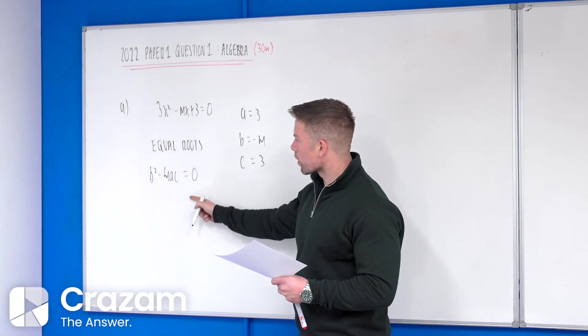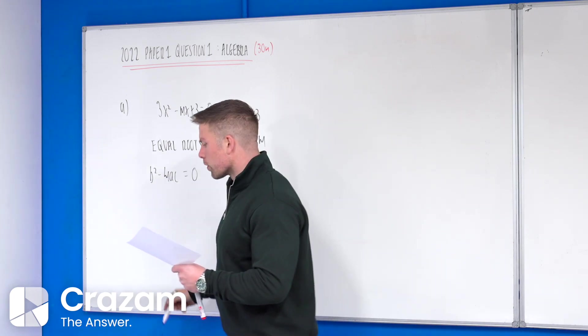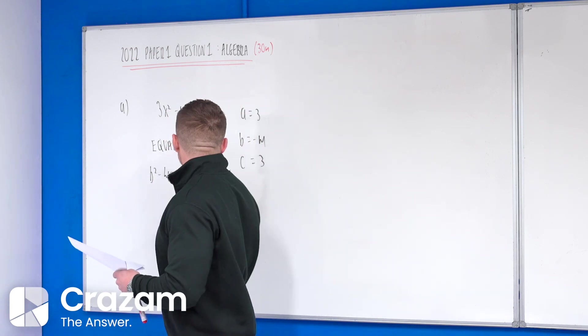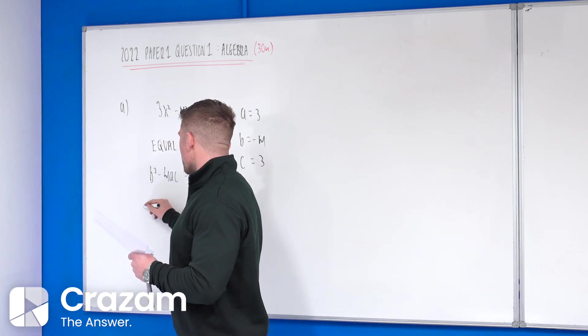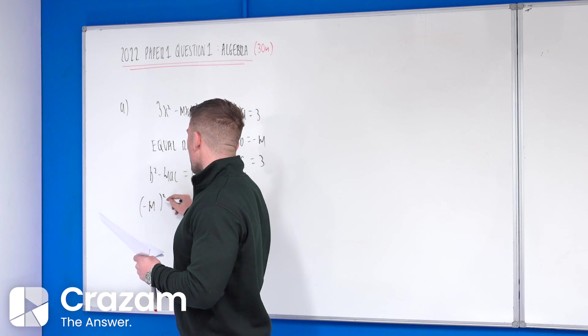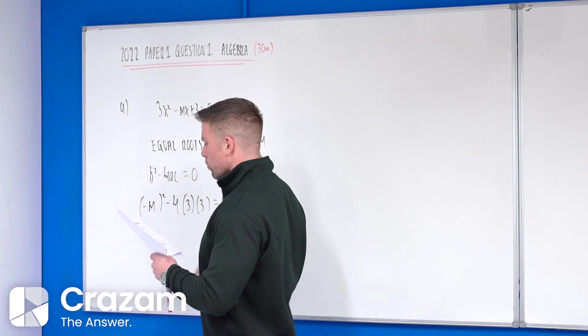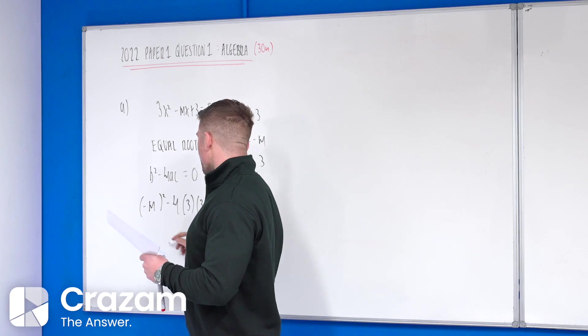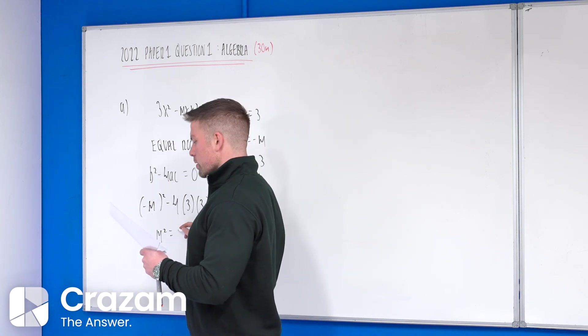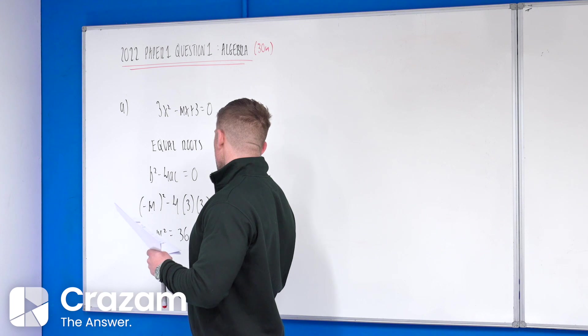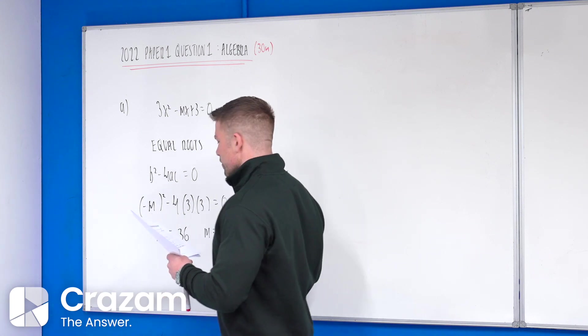So now what I'm going to have is one equation with one unknown, and that unknown is m, and that will allow me to get my answer. So in this case here, we have minus m squared minus 4 times 3 times 3 equals to 0. If you multiply this out, you get that m squared equals to 36, so m is plus or minus 6.